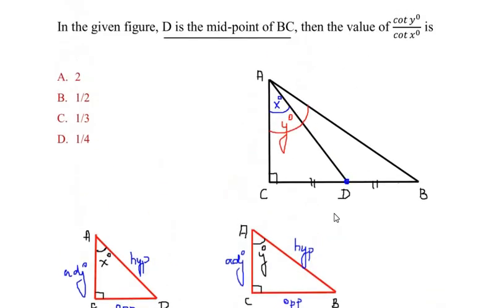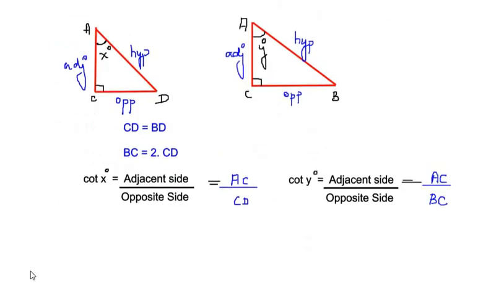Now in the given question, we have cot y degree divided by cot x degree. So let us write over here, cot y degree divided by cot x degree is equal to, substituting the values, that is AC over BC, the whole thing divided by cot x degree, which is AC over CD.